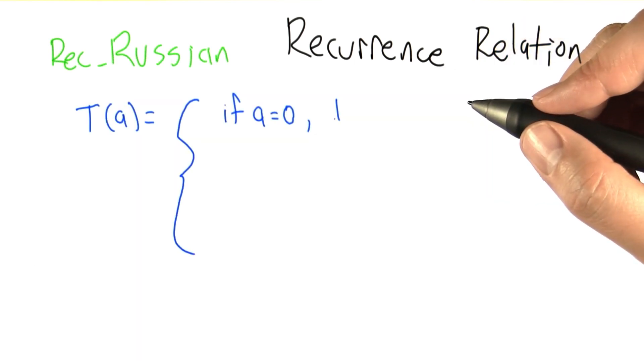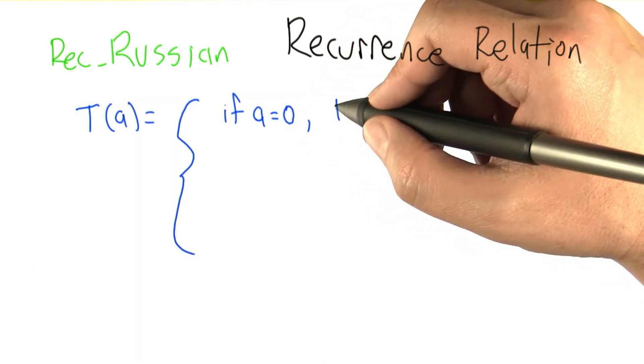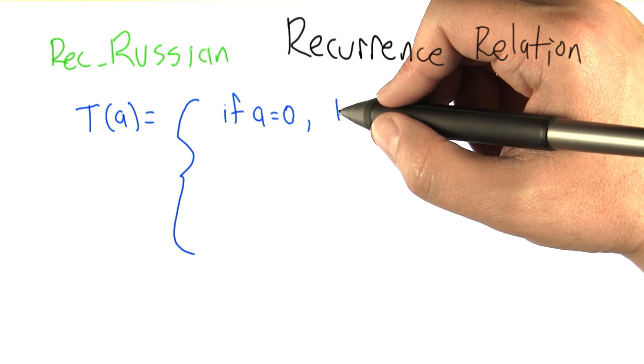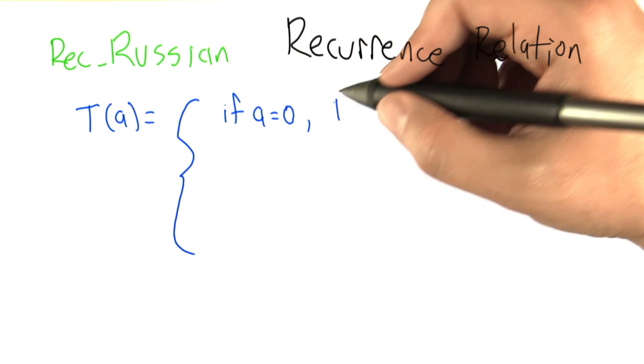Looking at the structure of rec-Russian, if a is 0, then it's going to execute one statement, basically the test to see whether it's 0 and then returned.